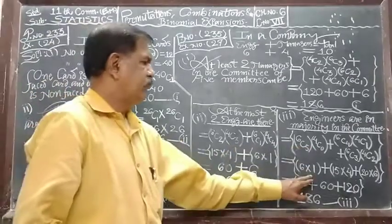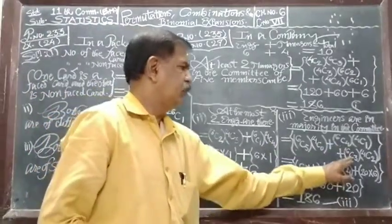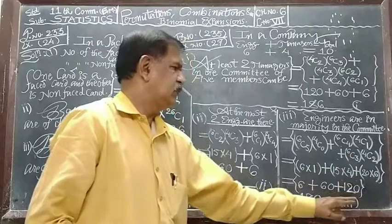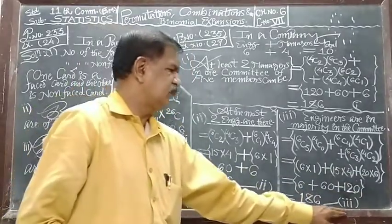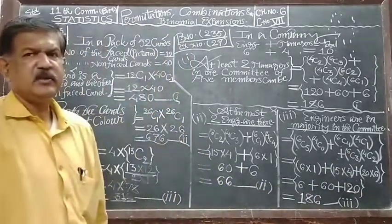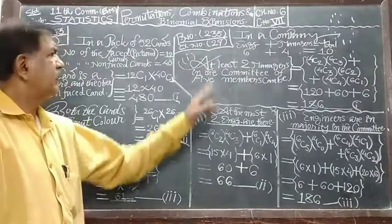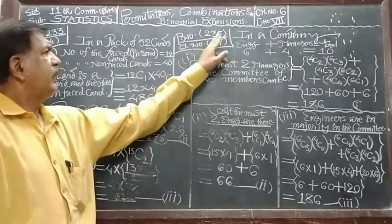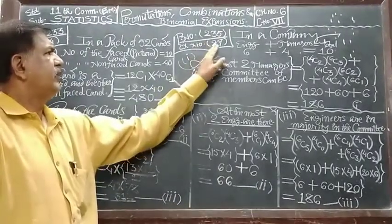Answer is 6 into 1, 15 into 4, 20 into 6. Ultimately the answer will be 186. Call this as result number 3. This is also illustration example from our textbook, page number 235, example number or illustration number 27.